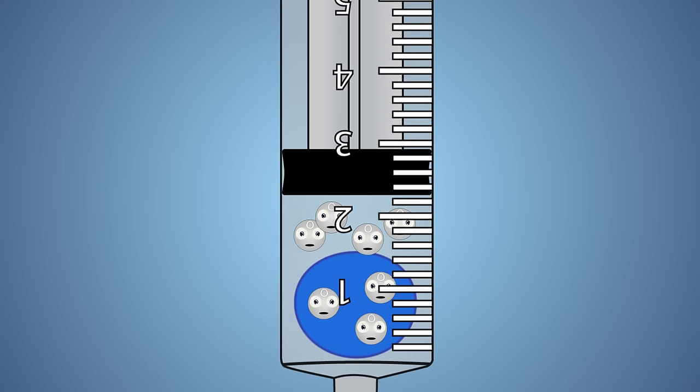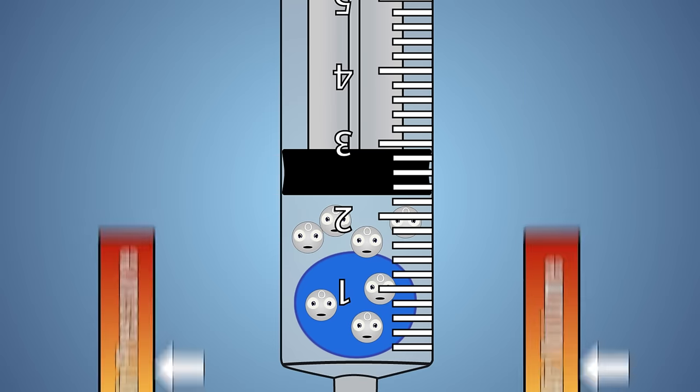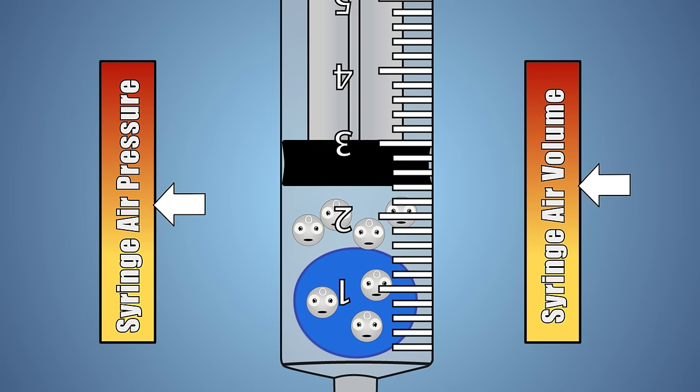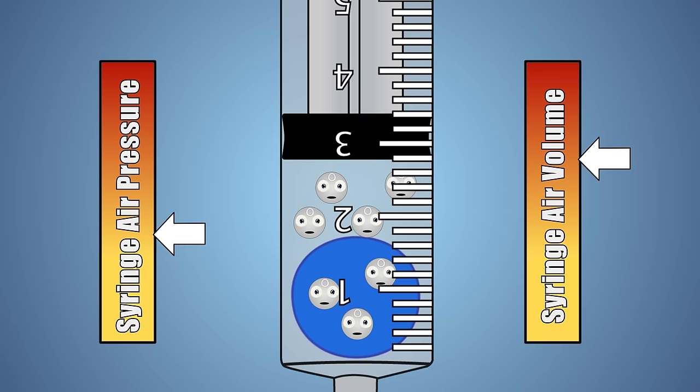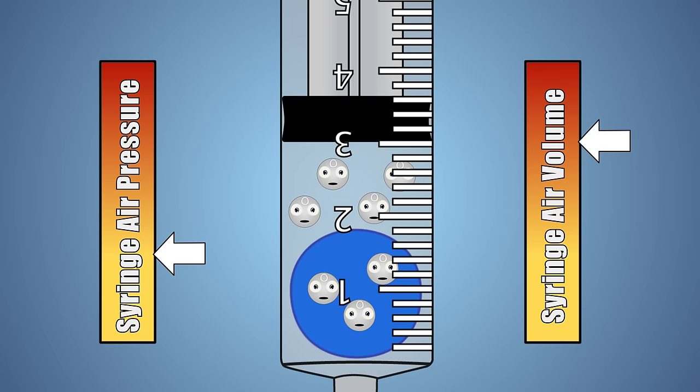In the second portion of our experiment, we start with the plunger at the bottom of our syringe, almost touching the balloon. When the plunger is pulled upwards, we are reducing the pressure inside the syringe by increasing the volume of space the air inside takes up.